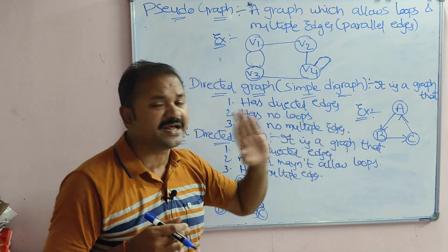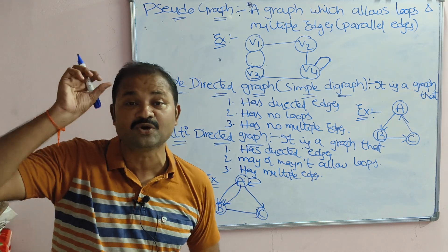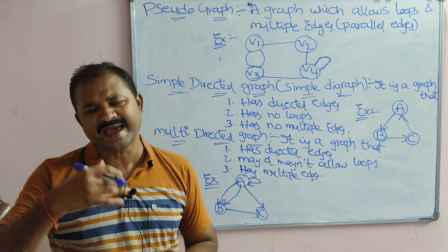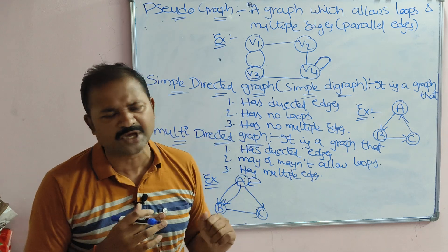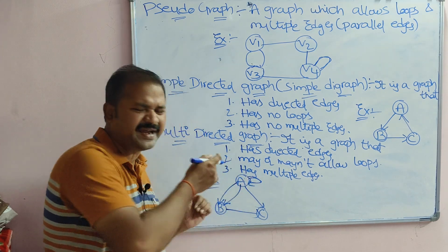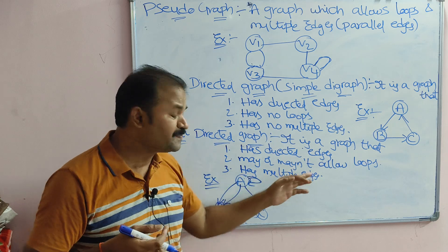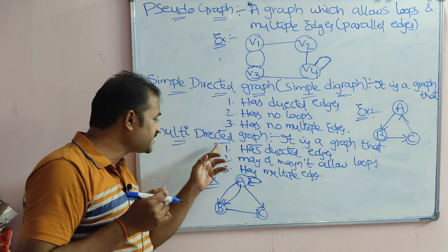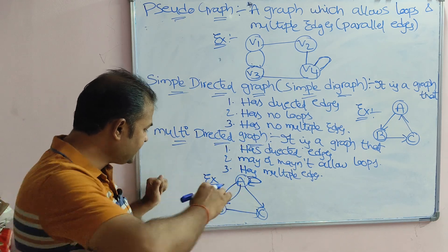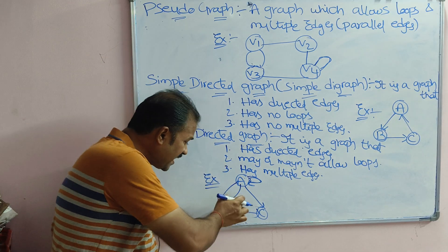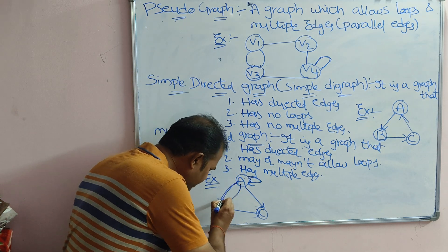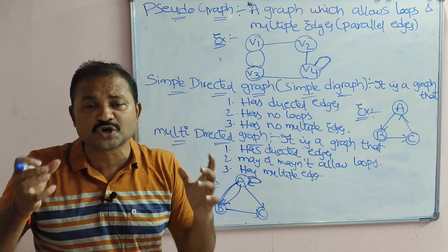A multi directed graph may or may not allow loops. A simple graph doesn't allow loops, whereas a multi directed graph can include a loop or not — it is our choice. Here we have a loop. The multi directed graph also has multiple edges, because 'multi' means it should allow multiple edges. From A to B and again from A to B — those two are multiple edges. For multiple edges, the direction must also be the same: if there is an edge from A to B, the second edge should also go from A to B.